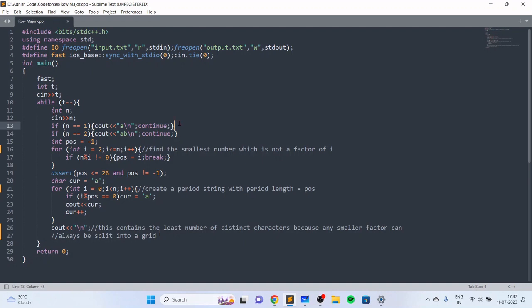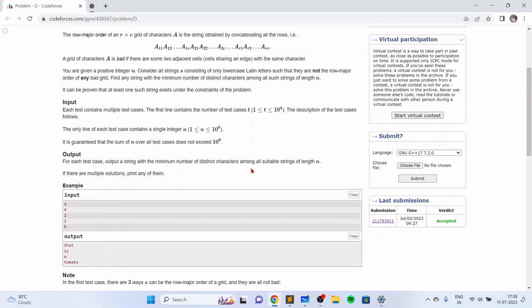Now I'll show the code which includes the same idea. First we handle some border cases, then we find the smallest number which is not a factor and create a periodic string with a period length equal to this number. This is the least number of distinct characters because any smaller factor can always be split into a grid and the resulting grid will violate the inequality condition because it will contain two adjacent rows which are equal.